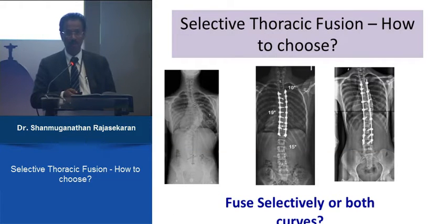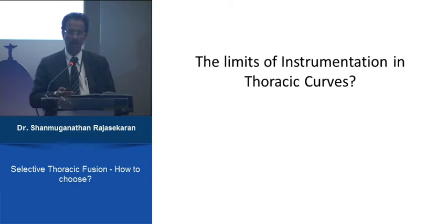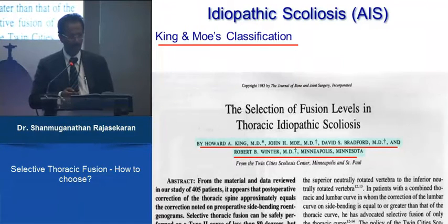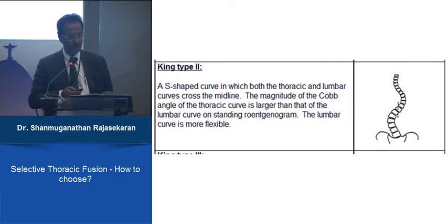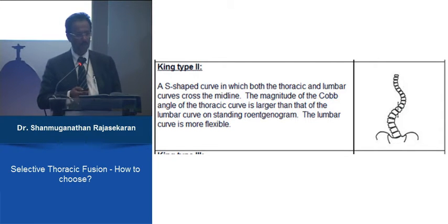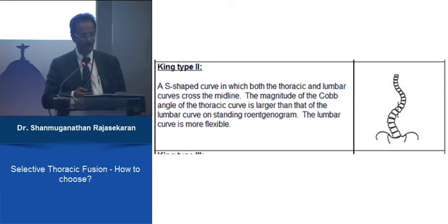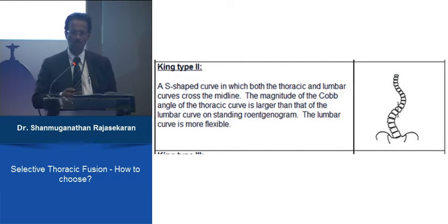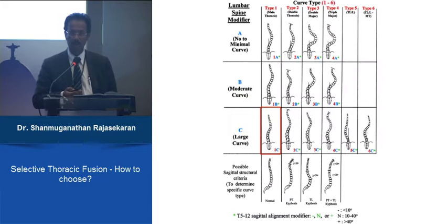Is it better to stop at the thoracic levels or go down to the lumbar level to ensure a good correction maintained over a long time? Before we discuss this, we must be clear about the type of curve we are talking about. In the King and Moe classification, King's type 2 is an S-shaped curve where both thoracic and lumbar curves cross the midline, but it is not a double major curve because the thoracic curve angle is larger and the lumbar curve is more flexible on side bending or traction film.